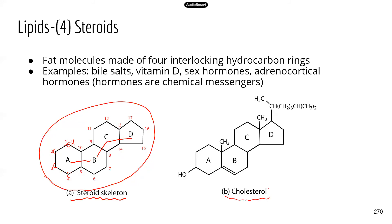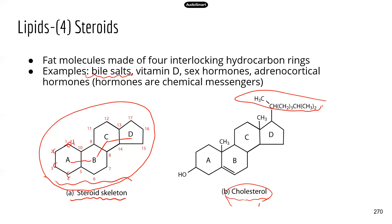For example, cholesterol — something we're all very familiar with — has a particular structure where chemical groups are added to the base steroid structure. There are many substances we know about that are actually steroids. For example, bile salts are found in bile, which is secreted by the liver and temporarily stored in the gallbladder. Bile salts help us break down and digest fats. When we eat a lot of fatty food, we need bile salts to break those fats down.